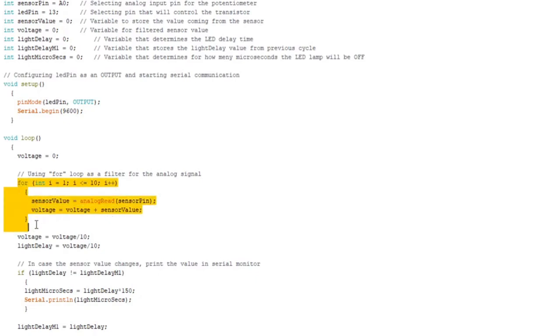Here you can see a for loop. And what it does basically is used as a simple filter. A lot of times the original analog signal was changing without even touching the potentiometer. So I needed some way to stabilize it.